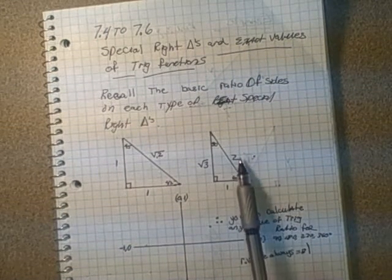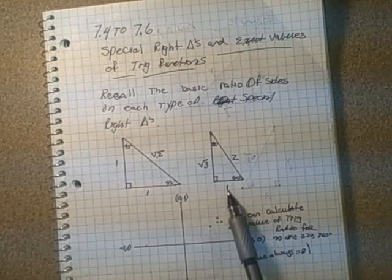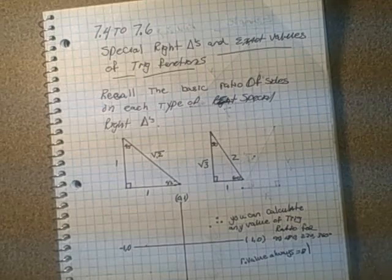So for example, if this side here for the 30, 60, 90 degree triangle was 20, we know that this one would be 10 because the ratio has to be a 2 to 1 ratio.